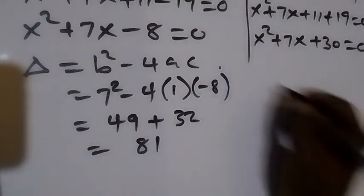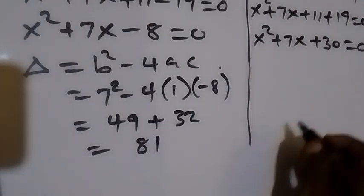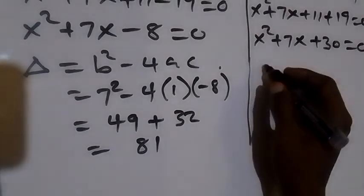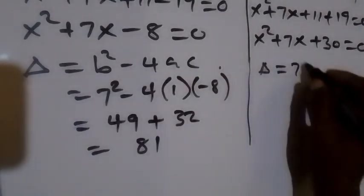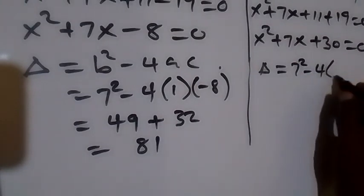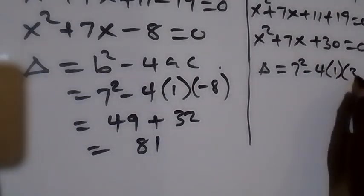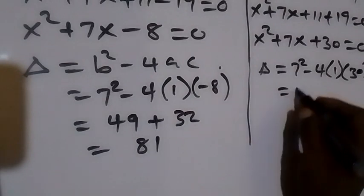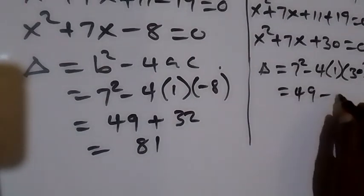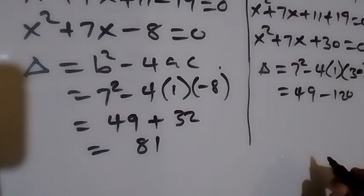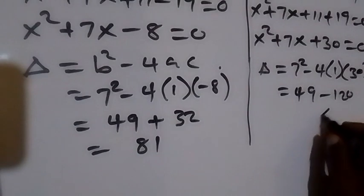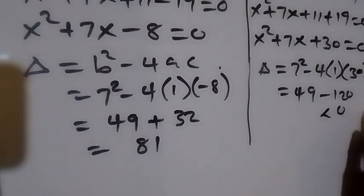For Case 2, we check the discriminant as well: b²−4ac = 7²−4(1)(30) = 49−120. This is less than 0, so there are no real solutions for this case.